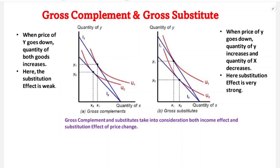Complement goods are those where one want is satisfied combinedly by two goods — those goods will be complement goods. And substitute goods are when one want is satisfied by two goods alternatively — both are substitute goods. We will now look at gross complement and gross substitute using the indifference curve.